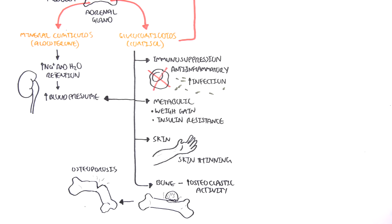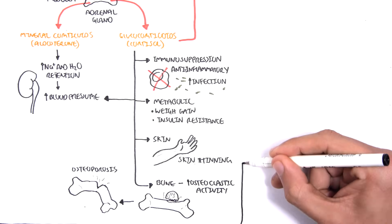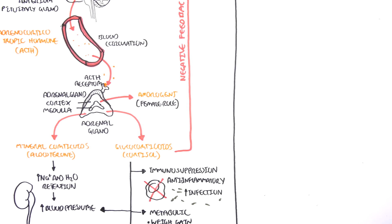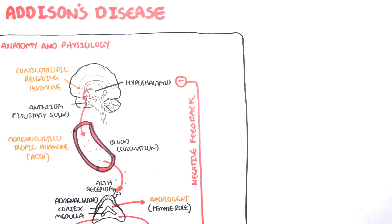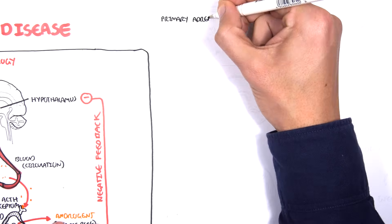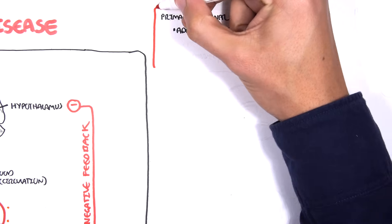The androgen secreted by the adrenal glands, as mentioned earlier, has more of an effect on females. From what we have learned, we can see that the adrenal glands have a big role in maintaining our body's homeostasis. Overproduction of adrenal cortex hormones can cause big problems, but also underproduction can have severe consequences. Addison's disease is essentially any cause of primary adrenal cortex insufficiency, or in other words, a decrease in production of adrenal cortex hormones.